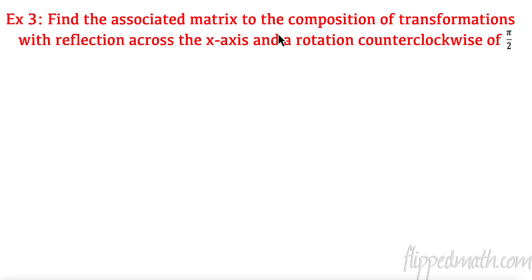Find the associated matrix to the composition of transformations with the reflection across the x-axis. We'll call that U and a rotation counterclockwise of T. So we have 2. This is the very first thing that is going to happen. So that would be the first matrix I would multiply my vector by. And then T would be the second one because it's on the outside.